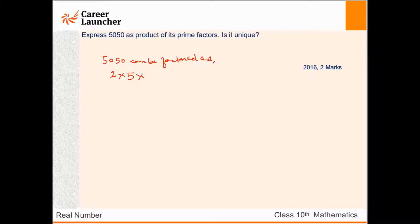So divide by 5 you get 505. So again you divide by 5 you get 101.